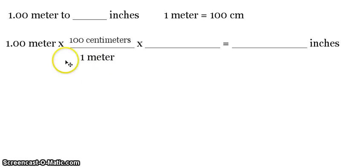Now, we need another conversion factor here to convert our centimeters into inches. So the equivalent statement that we need to convert centimeters into inches is written here. We have 1 centimeter is equal to 2.54 inches.